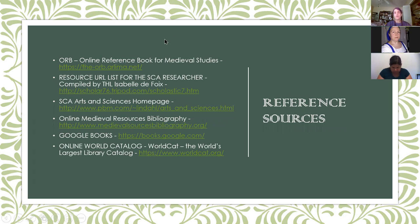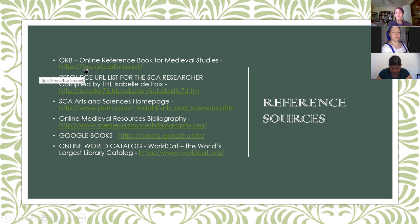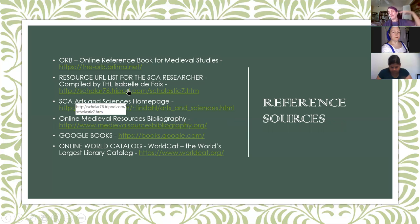Here are some reference sources where you can start looking for information that others have compiled. These are really good resources. The Online Reference Book for Medieval Studies has manuscripts and research from other libraries and individual researchers — it's a great place to start. The Research List for SCA Researchers has a large collection of links to many resources for the different subjects that come up in SCA research. It's really comprehensive.